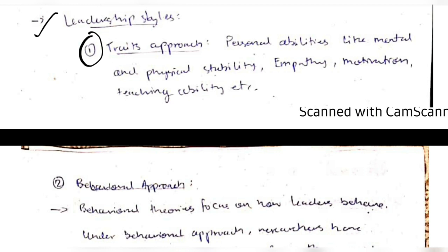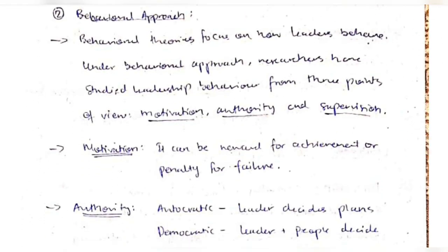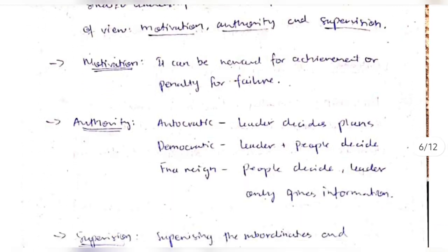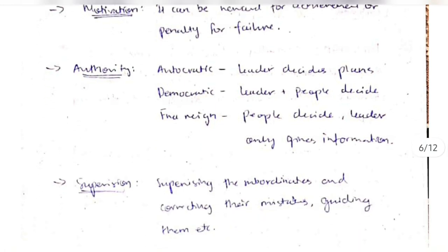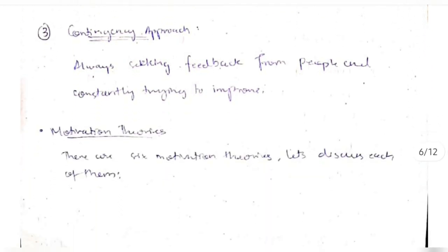There are three main styles of leadership. The traits approach: the leader is chosen based on mental and physical stability, empathy, motivation, and teaching ability. The behavior approach: how the leader motivates people, their style of authority — autocratic, democratic, or free-rein — and how they supervise and correct mistakes. The contingency approach involves taking feedback from people and improving oneself.